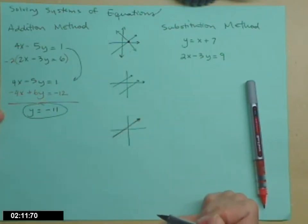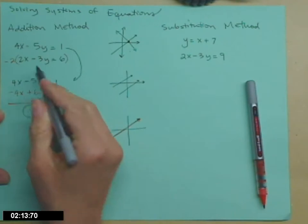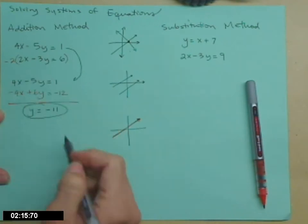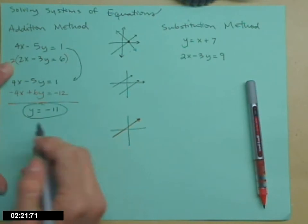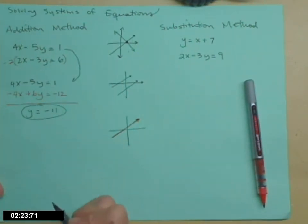So now I have to find what the x value is. If y is negative 11, I need to go to one of my equations to figure out what the x partner is. And it doesn't matter which equation you go to. I'll use the top one.